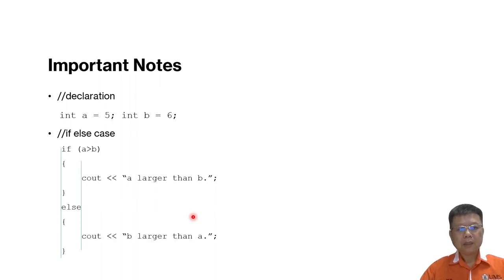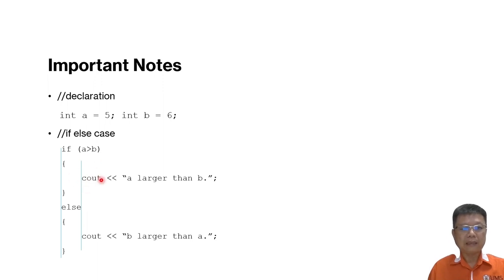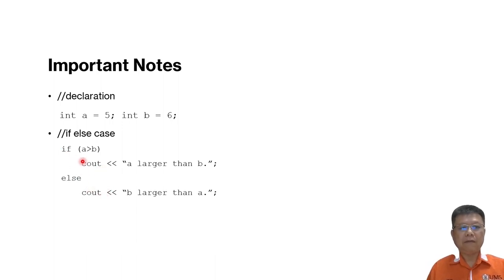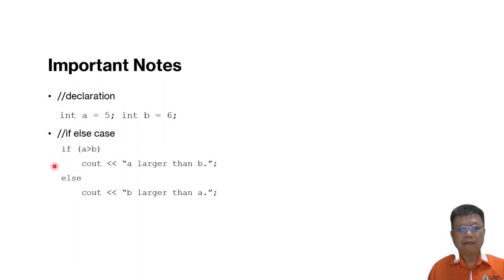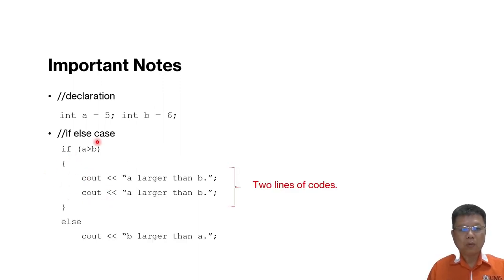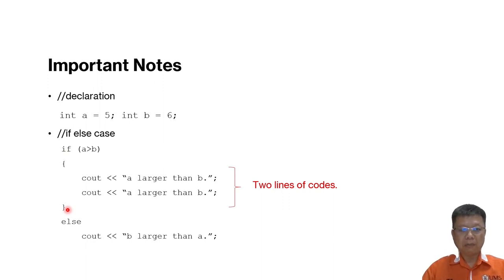Before we go to the coding part, it is important to note that when we write code in if-else, we should have good practice where we arrange them vertically, so that we know which statement belongs to which nested if. In case you only have one statement after if or else conditions, the curly bracket is not very important, because the compiler knows that after the if line it will go to the cout statement. But if you have more than one statement inside one if case, then we must have curly brackets — it's a must, otherwise the compiler will make a mistake.